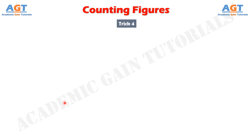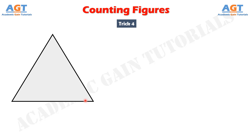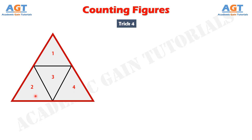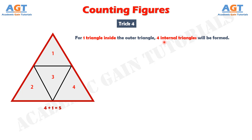Now let's hop into trick number 4, which is an important and exciting trick, and this type of problem is very common in exams. The problem is like this: we have an outer triangle, and inside it there is another triangle that touches each side of this outer triangle. There are 4 internal triangles: this one, this one, this one, and this one — plus the big outer triangle. So if a triangle touches each side of an outer triangle, 4 internal triangles are formed, plus the outer triangle, giving 5 total. We must remember: for 1 triangle inside touching all sides, 4 internal triangles are formed.